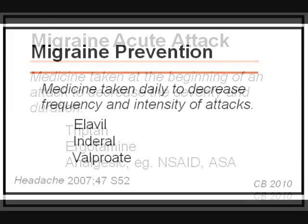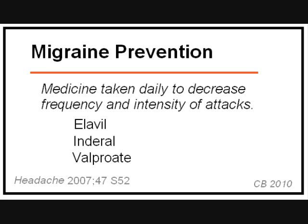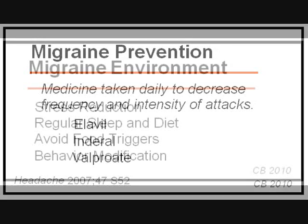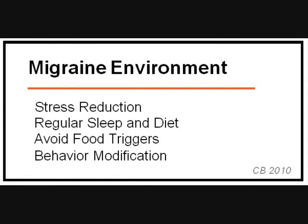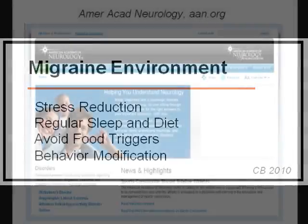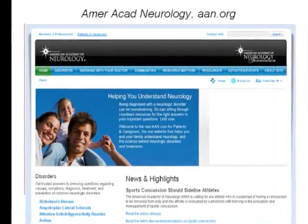Prevention: if migraine attacks occur frequently enough to interfere with daily life, there are medicines you can take on a daily basis to decrease the frequency and intensity of attacks. The current first-line recommendations include the antidepressant Elavil, beta-blockers like Inderal, and anticonvulsants like Valproate — and there are other options your doctor may choose. People with migraine sometimes benefit from other approaches: reducing stress to the extent possible, getting sufficient regular sleep and eating regularly, and avoiding food triggers.